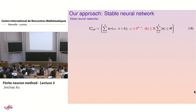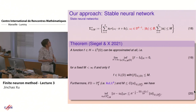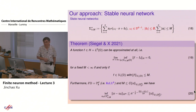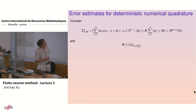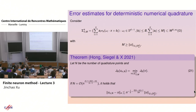The bound M is related to the regularity of the solution, measured in the variation space or Barron space. The convergence theorems I showed: if we use the H^m norm you have some loss, but the negative-half power is always there. Using the stable neural network, if you use sufficiently many quadrature points you can do a triangle inequality argument and get the best approximation property. That's the theory — proved under the assumption that the global minimizer can be found.